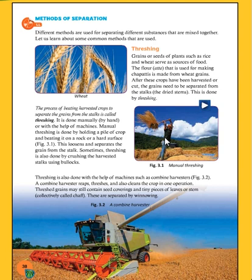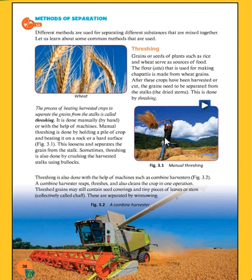The process of beating harvested crops to separate the grains from the stalk is called threshing. It is done manually by hand or with the help of a machine.